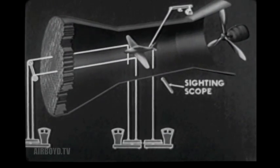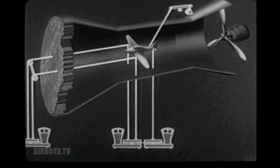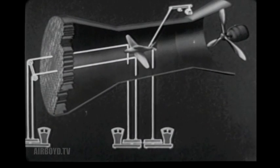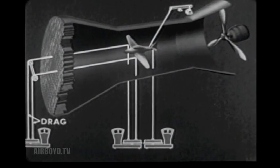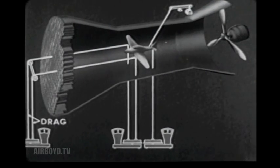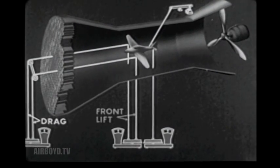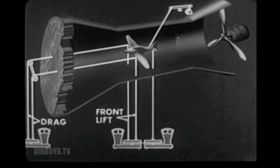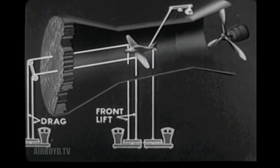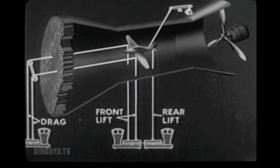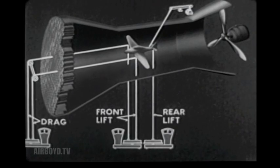The position of the model is observed through sighting scopes. With the air flowing at the desired velocity, drag force is exerted upon these wires. Front lift is measured as the actual lifting force upon these wires, and rear lift as the force upon this wire. Total lift is the sum of front and rear lifts.